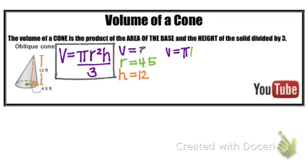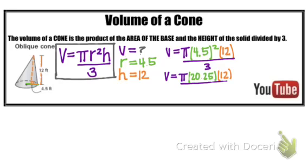So now we can plug in everything that we're given. Volume is equal to pi times the radius squared times the height divided by 3. So 4.5 squared is 20.25 times 12 divided by 3. I'm going to continue below the line here. 20.25 times 12 is 243. Don't forget the pi divided by 3.